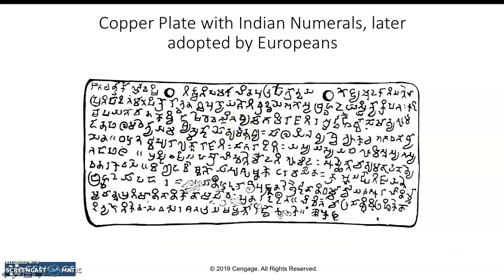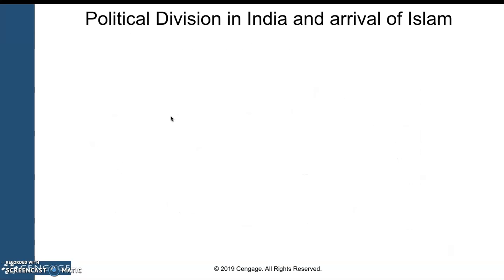One thing briefly worth mentioning is Indian numerals — what is commonly called Arabic numerals. The Arabs actually got the numeral system from the Indians. These are not the exact numbers we use today, but you can see shapes similar to a two, three, eight, and other numbers — very similar to what we use today for our numerical system.